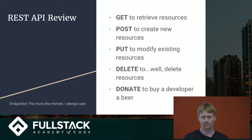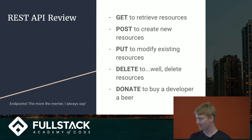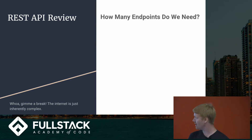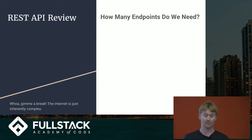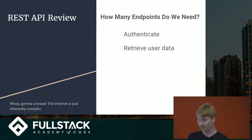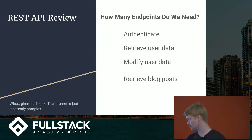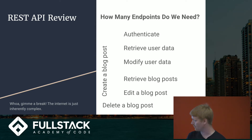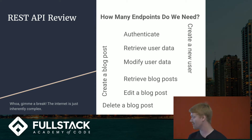With REST APIs, you have to build a bunch of different endpoints that correlate with HTTP requests: GET, POST, PUT, DELETE, and others. For a simple blogging application with users who write posts, how many endpoints do we need? We need authentication, retrieving and modifying user data, retrieving blog posts, editing a blog post, deleting a blog post, creating a blog post, creating a new user — it can get a little hairy.